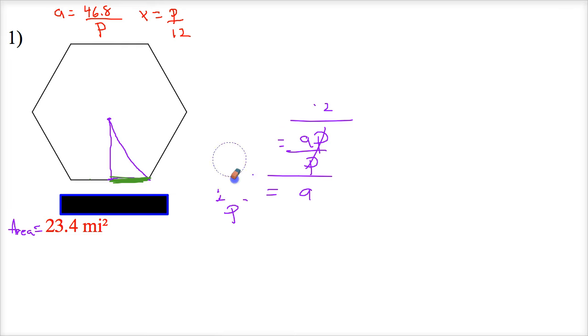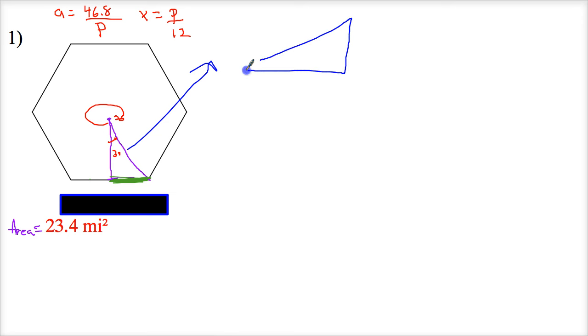So based on how that's all set up, this is 360 degrees here. So 360 divided by 6 would mean that each one of these isosceles triangles are 60 degrees. So this part here would just be 30 degrees. So I'm going to redraw this over here. And say 30 degrees.